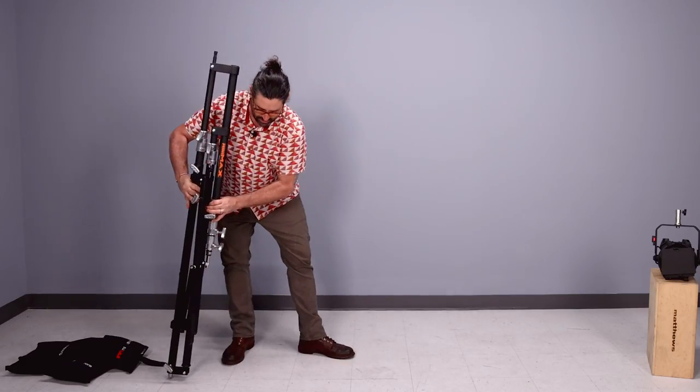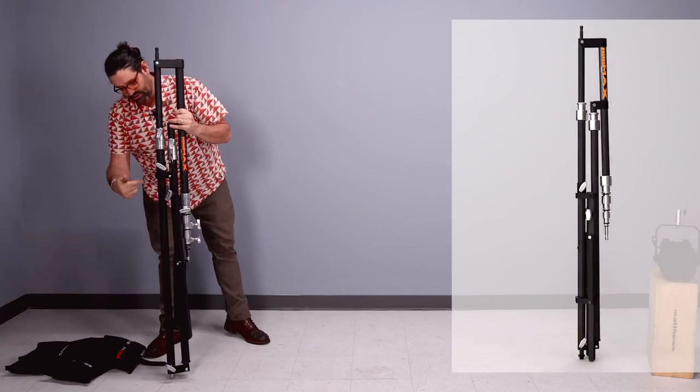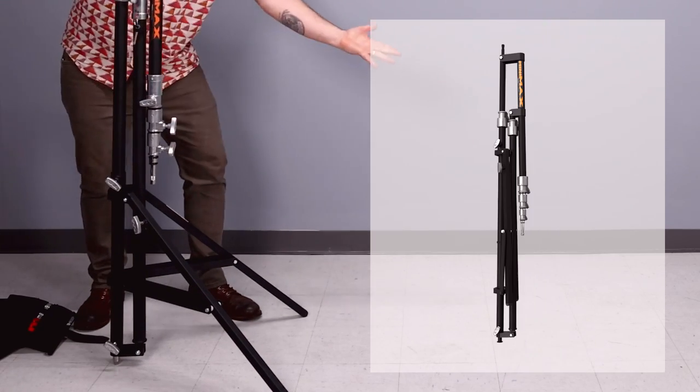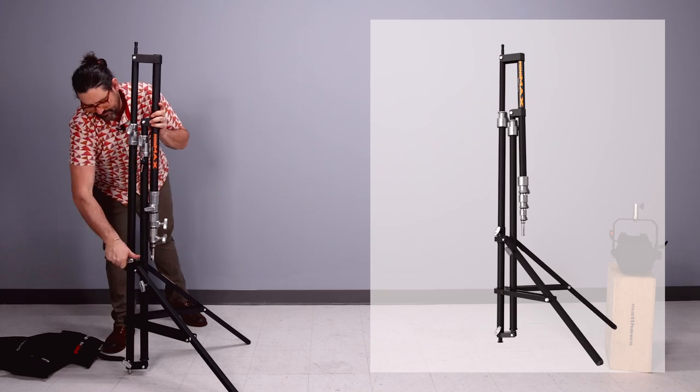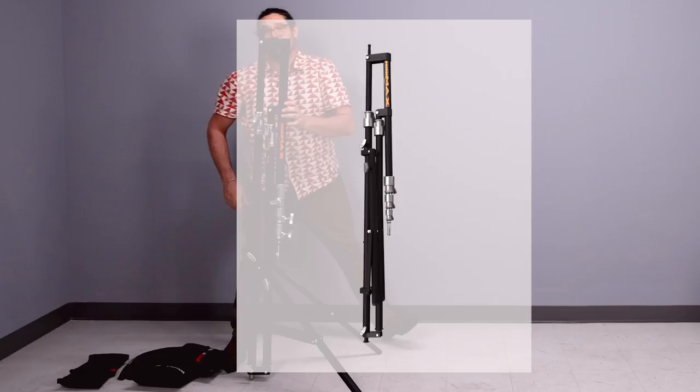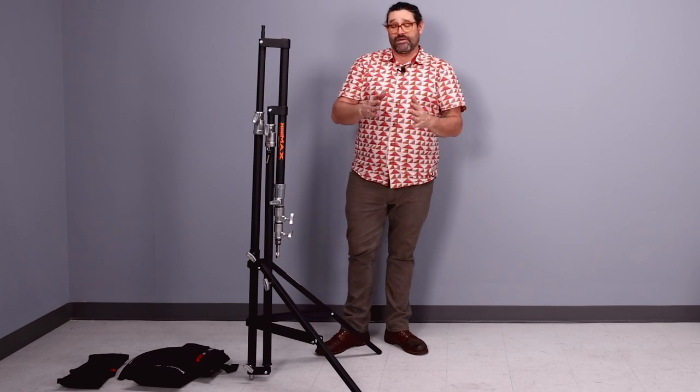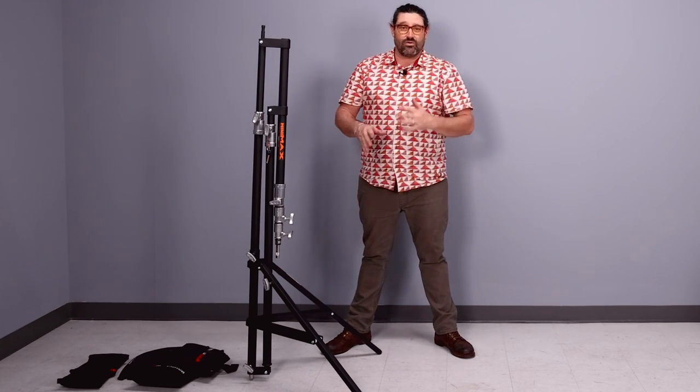The first thing you're going to want to do is deploy the legs. So you're going to loosen this T-handle right here on the rear vertical riser and just like that your legs are deployed. You're going to lock it off and your stand will now be standing on its own. But in order to continue getting this guy set up, you're going to want a nice solid weighted base.